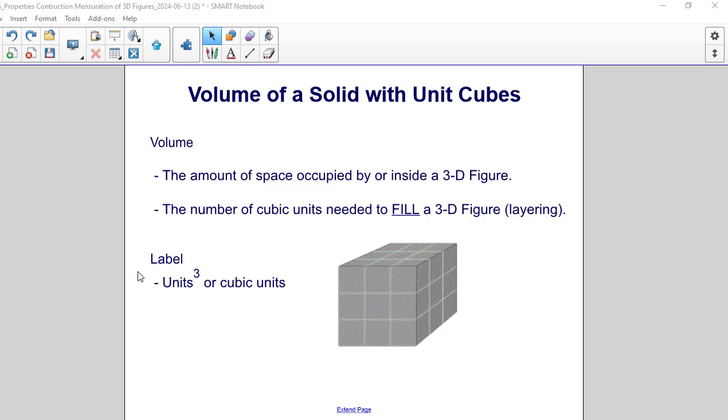As far as labeling goes, there's two ways you can label volume. One is with using the word units, and units can refer to any type of measurement. So if you're using the metric system, it would be meters, centimeters. If you're using the American system, it would be feet, yards, whatever unit you're using for length. Units would go here with this little three raised up. That's called an exponent, and that would be read as units cubed, or another way to say it would be cubic units.